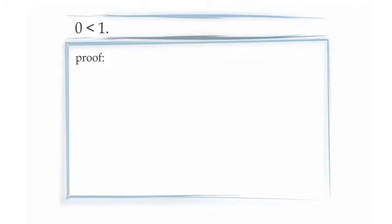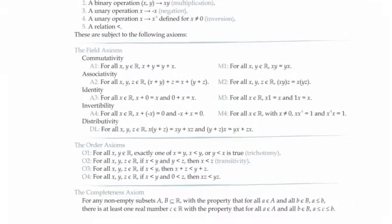We're going to prove that the number 0 is less than the number 1. To do this, we're going to need the order axioms, because this has to do with the order relation on the real numbers. Let's take a minute to review the order axioms.